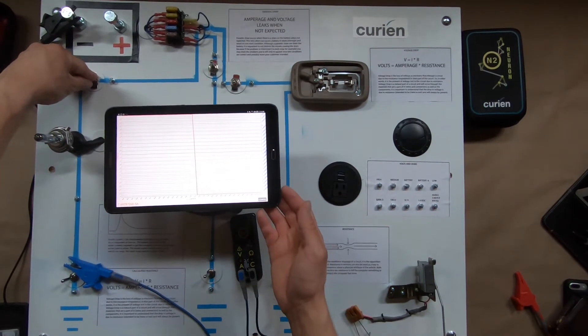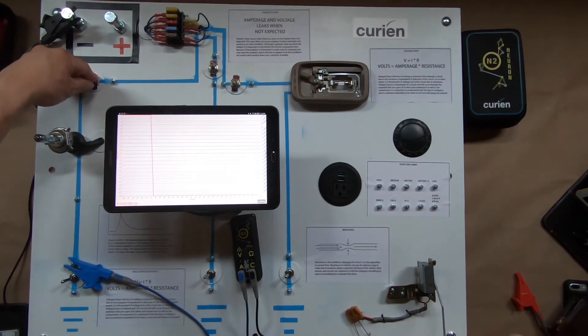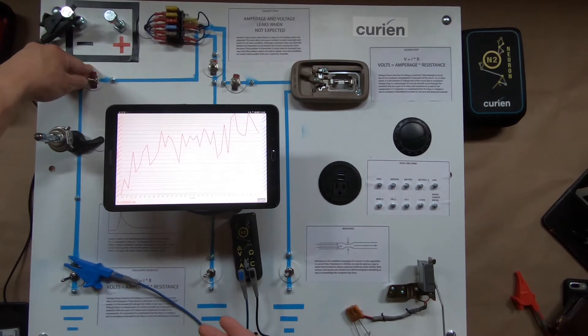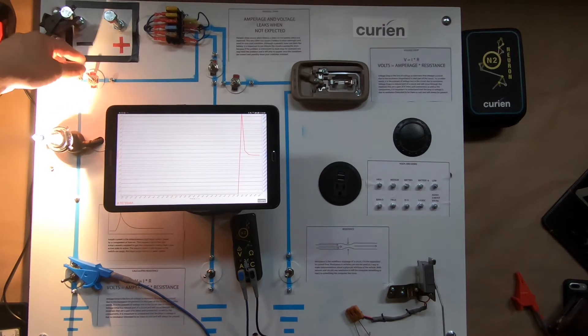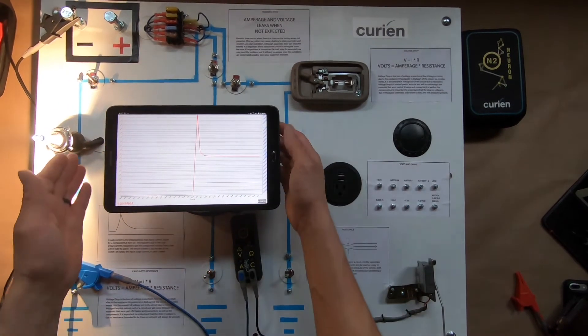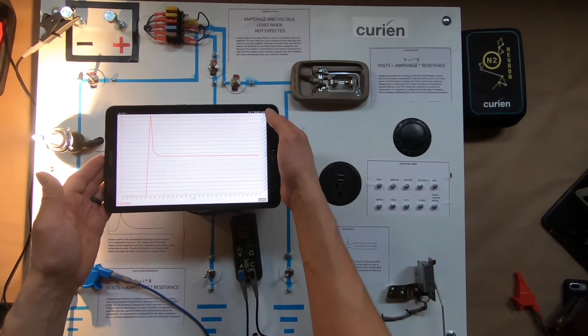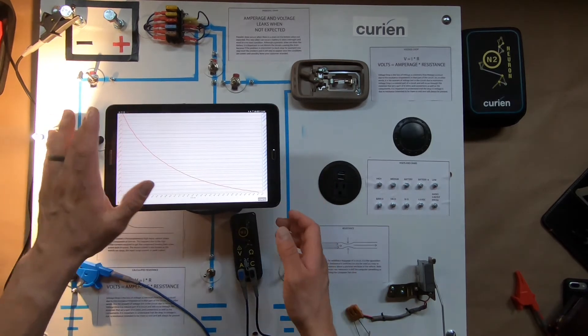So a big part of watching the inrush current, or the max current, or peak current as some folks say, is you can actually start to get an idea about the operating health of your circuit. As I turn that on, you could see we peaked out to about nine, almost 10 amps, and then we came back around.